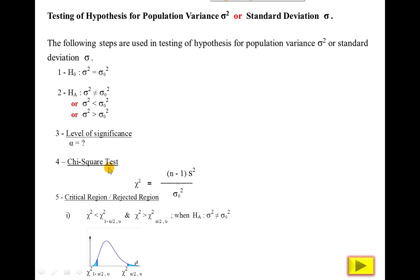The fourth step is test statistics — we will use the chi-square test. The notation is chi square. The formula reads: chi square equals n minus 1 times s square divided by sigma naught square. Here n is the sample size, s square is the sample variance, and sigma naught square is the population variance. From this you will obtain the chi square calculated value, the observed result.